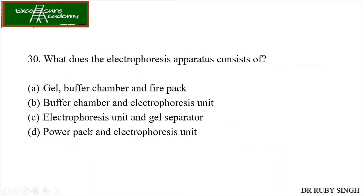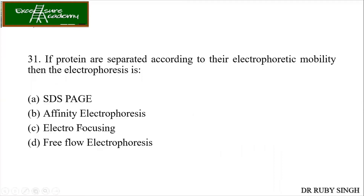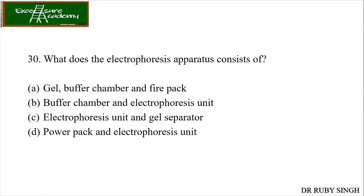What does an electrophoresis apparatus consist of? This is very simple — such questions probably won't be asked, but it has a gel, buffer chamber, power pack, and electrophoresis unit. The power pack and electrophoresis unit are the main components, and within the electrophoresis unit you have the gel, buffer chamber, etc. So the answer is option D — power pack and the electrophoresis unit.